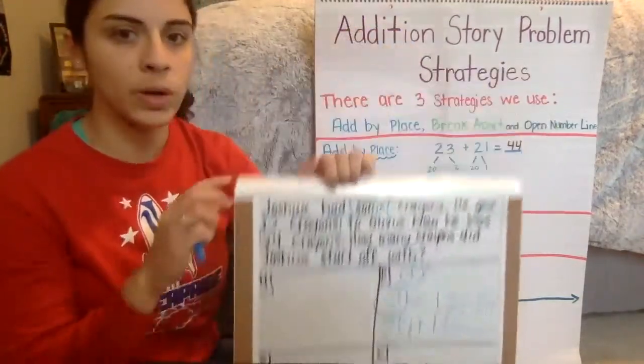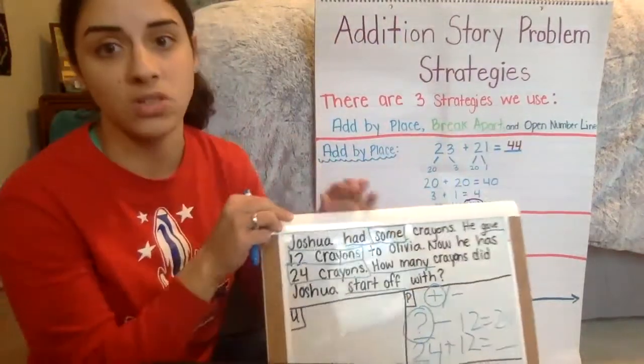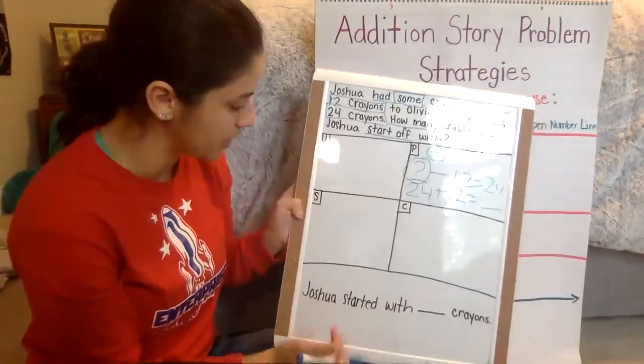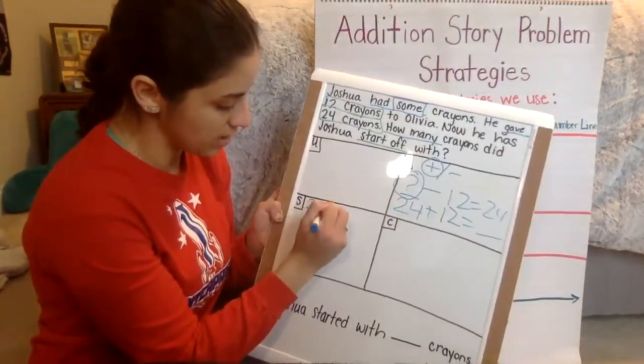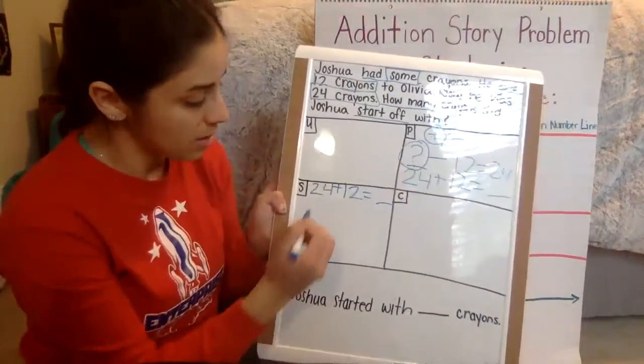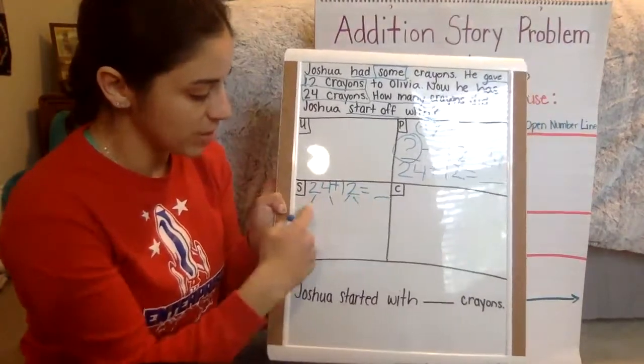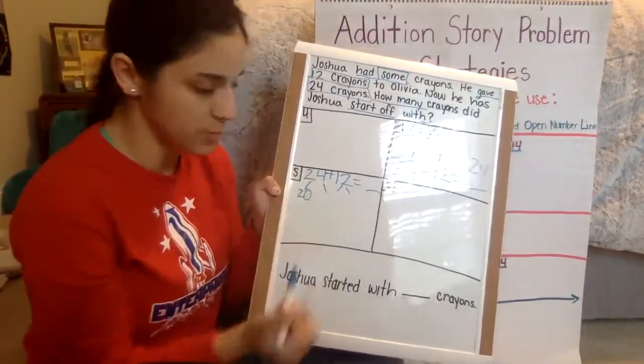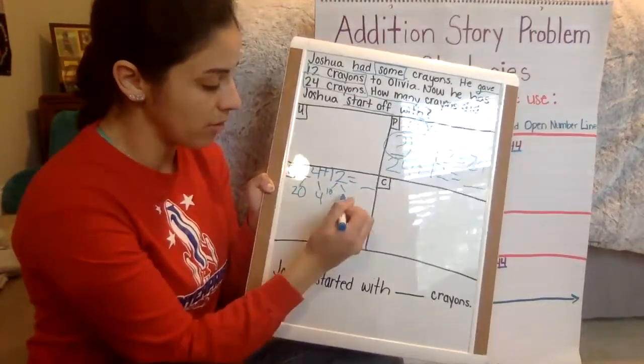So now this is where we're going to use these strategies to solve the problem. You don't have to use all three of them. You can use two of them to solve this. Use the two that you feel most comfortable with. So to solve the problem, I'm going to do add by place. So I'm going to write the problem down here. 24 plus 12 equals blank. Okay. And then to do that, I'm going to do add by place. So I need to know how many tens are in 24. And I know there's two tens, which would be 20. And there's four ones. And then there's one 10 in 12 and two ones.